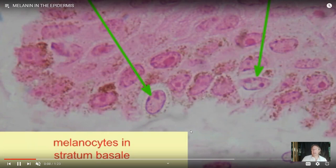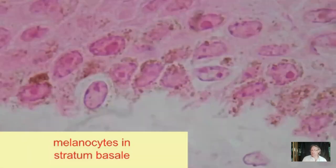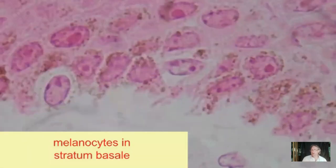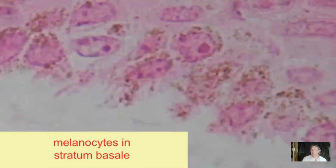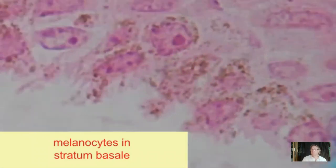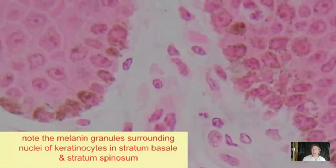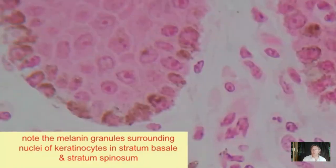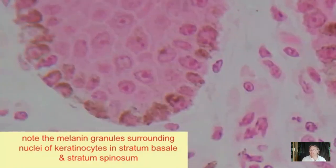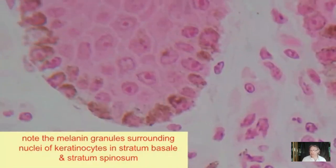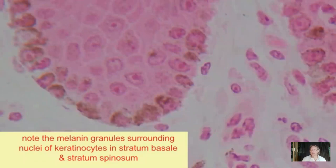Melanocytes make melanin and their long processes extend into the keratinocytes, especially in the basal layer of the epidermis, where they inject granules of melanin. This melanin surrounds the nucleus and protects it from ultraviolet light.